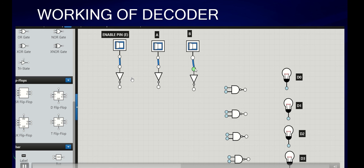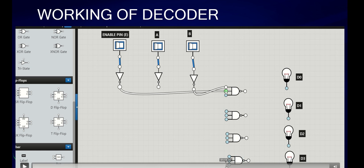We'll be just giving the connections. Enable pin is connected to NOT gate, a is connected to another NOT gate and b is also connected to another NOT gate. b's NOT gate will be connected as the input of the first NAND gate. And all the connections will be done.